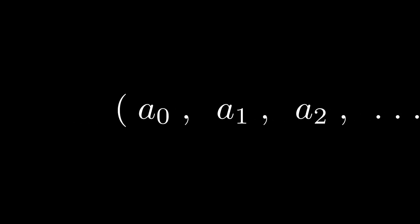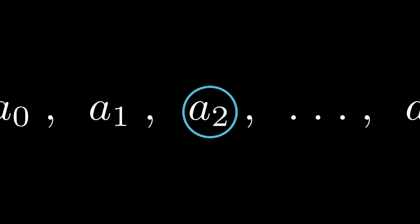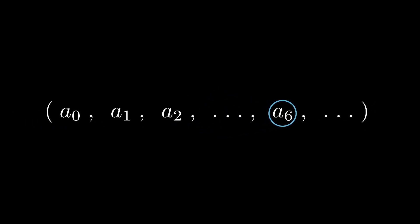This formula describes how to calculate each term as the sum of the two previous terms. For example, the seventh term of the sequence is a_6 = 13. Note that the seventh term is a_6 because we start with the element indexed by zero: first term a_0, second term a_1, third term a_2, and so on until the seventh term a_6.